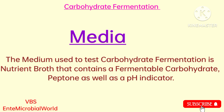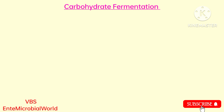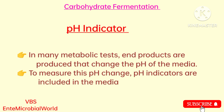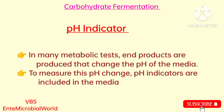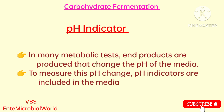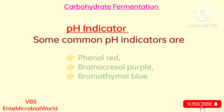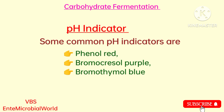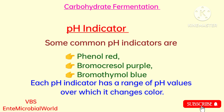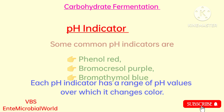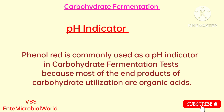The medium used to test carbohydrate fermentation is nutrient broth that contains a fermentable carbohydrate, peptone, as well as a pH indicator. In many metabolic tests, end products are produced that change the pH of the medium. To measure this pH change, pH indicators are included in the medium. Some common pH indicators are phenol red, bromocresyl purple, and bromothymol blue. Each pH indicator has a range of pH values over which it changes color. Phenol red is commonly used in carbohydrate fermentation tests because most end products of carbohydrate utilization are organic acids.